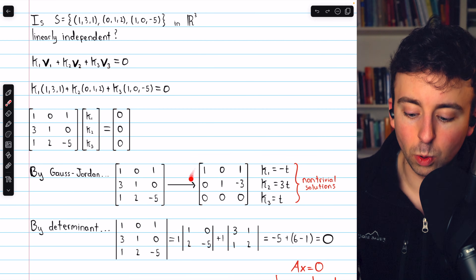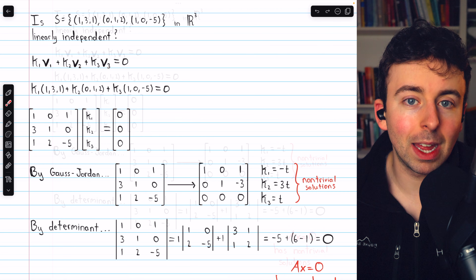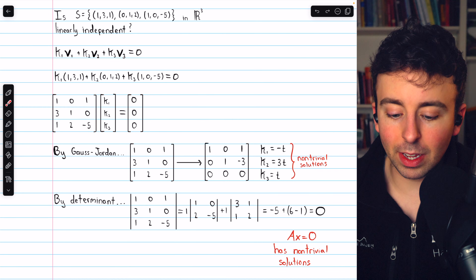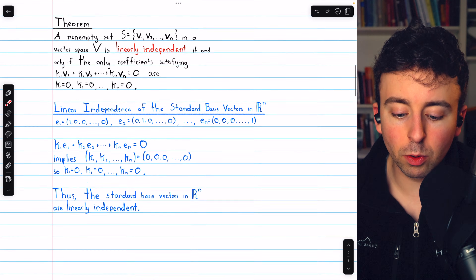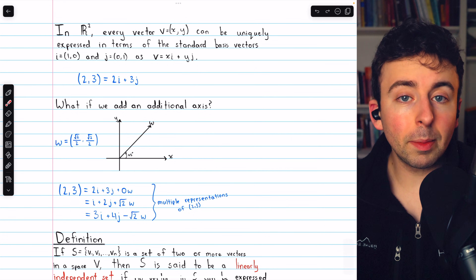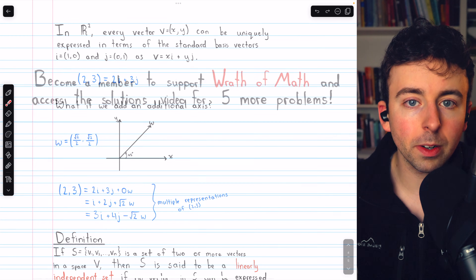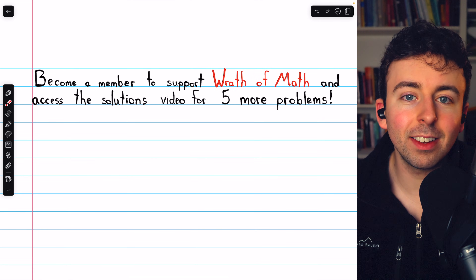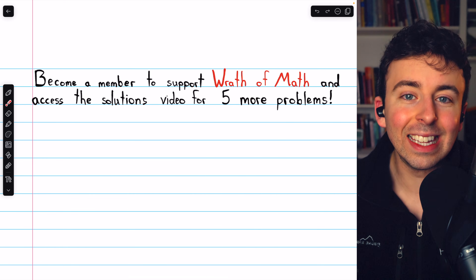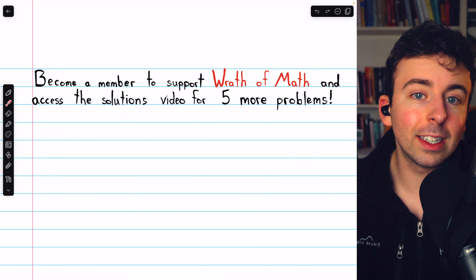That's what linearly independent vectors are — some examples and the critical theorem we generally use to determine if a set of vectors is linearly independent. Let me know in the comments if you have any questions, and check out my Linear Algebra course and exercises playlists in the description. If you want to help support what I do and get access to more practice, please consider joining Wrath of Math as a channel member, where you can access solutions videos for more problems concerning linear independence.